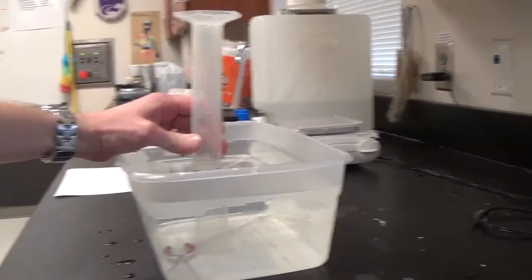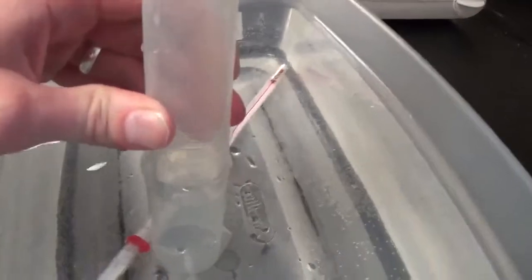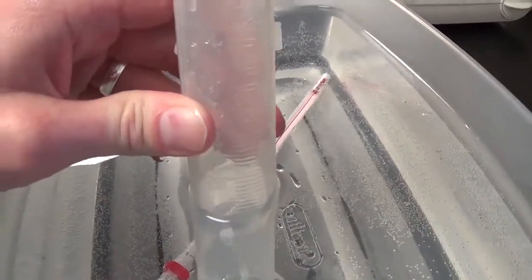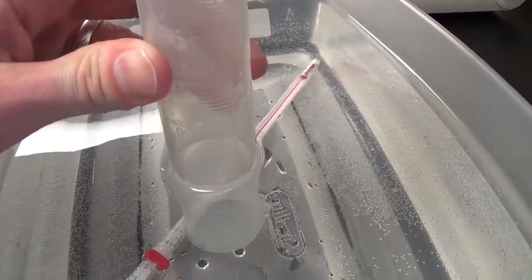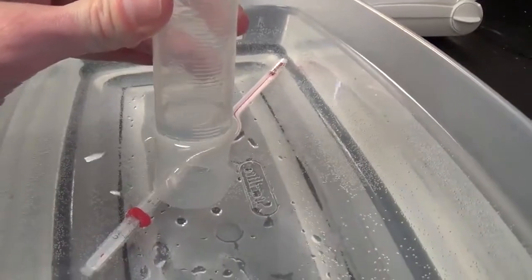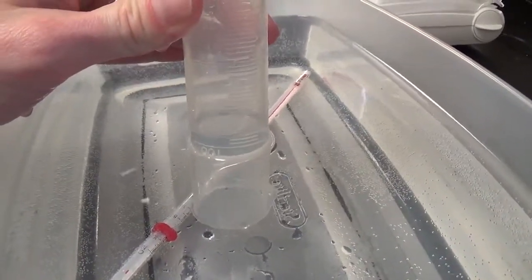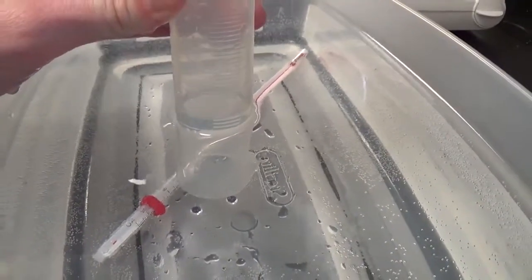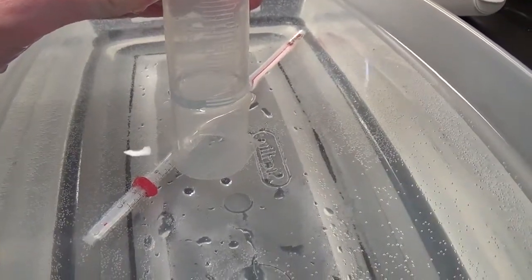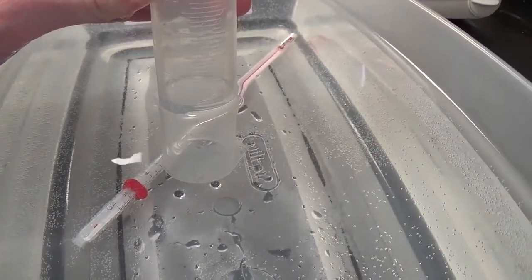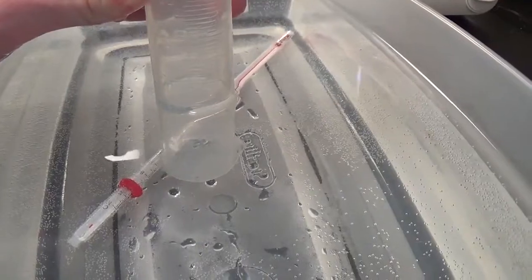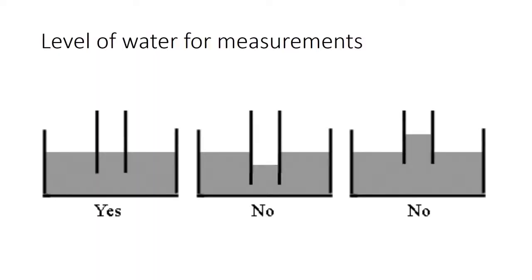It's only necessary that you know exactly what you have, not that it be exactly some specific number. Now you can lift the graduated cylinder up, and you can see that the water level could be a little above or a little below the water level in the tub. You want it exactly the same as the water level in the tub. That guarantees that the pressure is the same.